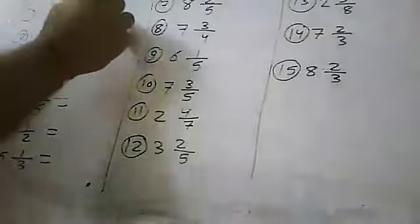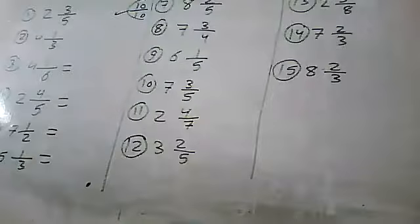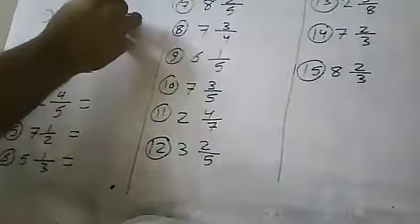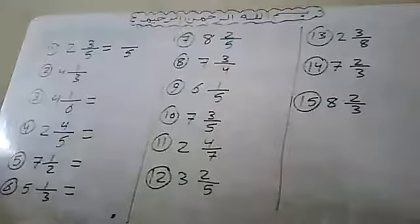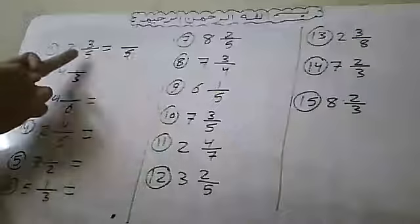Let's look at the answers together. The first one: write five below, five times six equals thirty, thirty plus three equals thirty-three. So the answer is thirty-three over five. If you got it right, mark it correct next to your answer. We'll total your score at the end.